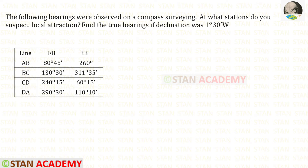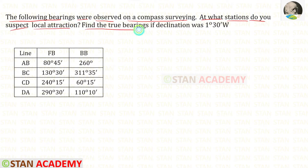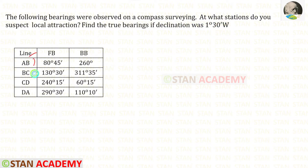Hello everyone. Today we are going to see a problem based on compass surveying. Let us read the question. The following bearings were observed in a compass surveying. At what stations do you suspect local attraction? Find the true bearings if declination was 1 degree 30 minutes west. Lines are given, and for each line the forebearing and backbearing are given.